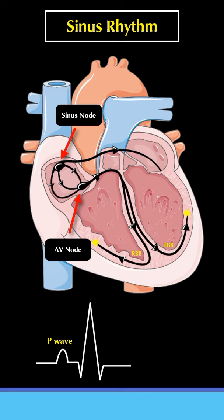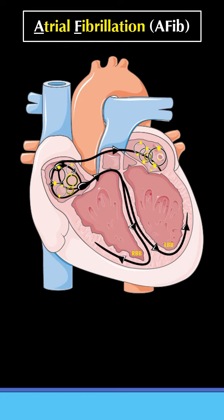In atrial fibrillation, numerous erratic electrical circuits are present in the top chambers, causing them to quiver or fibrillate. Occasionally, an impulse makes its way down to the main chambers randomly. This results in an irregular and often fast heartbeat.